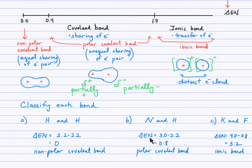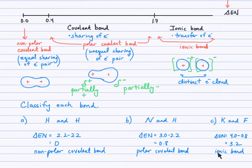For nitrogen and hydrogen, the difference ended up being 0.8 — falling in the polar covalent region. For potassium and fluorine, the difference is 3.2, quite significant — definitely greater than 1.7 — so we have an ionic bond forming between potassium and fluorine, and the potassium and fluoride ions would be formed. So: transfer of electrons for ionic, unequal sharing for polar covalent, and equal sharing with a difference of zero for the nonpolar covalent bond.